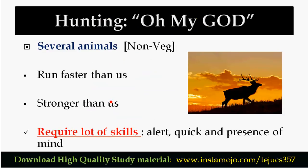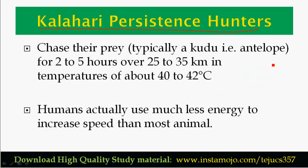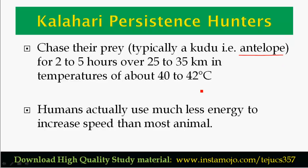Wild animals are very fast — it takes over 40 to 42 degrees of temperature and the animals can run over 25 to 35 kilometers continuously. The earliest people could pursue an antelope continuously for two to five hours over 25 to 35 kilometers. Under 40 to 42 degrees temperature, they would chase the animal.